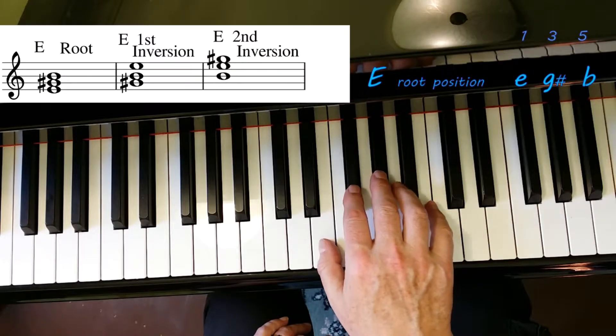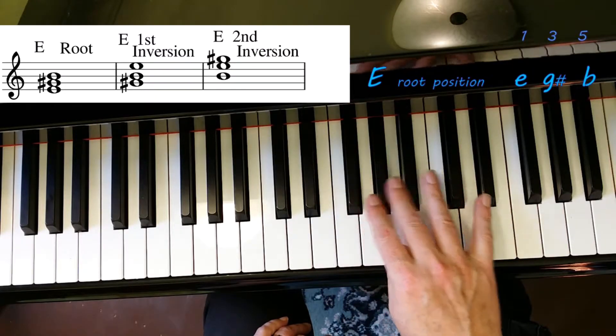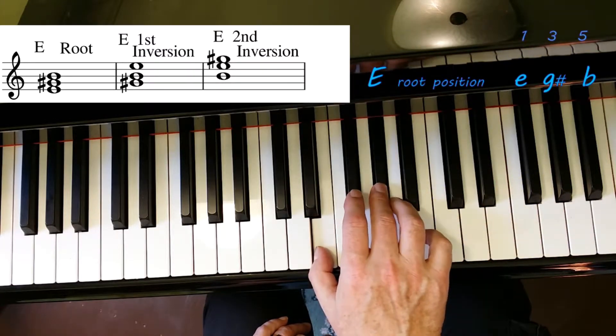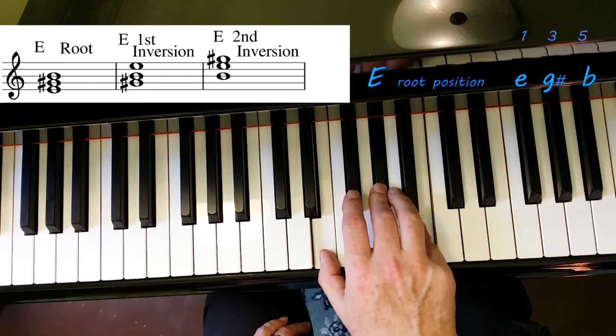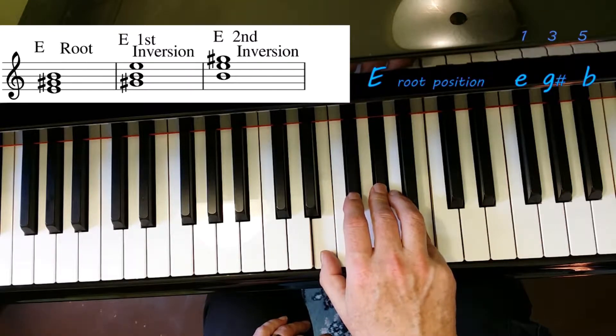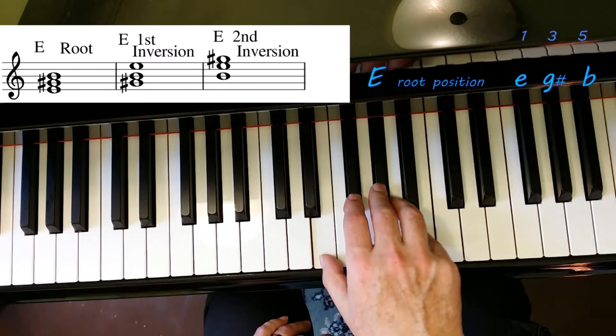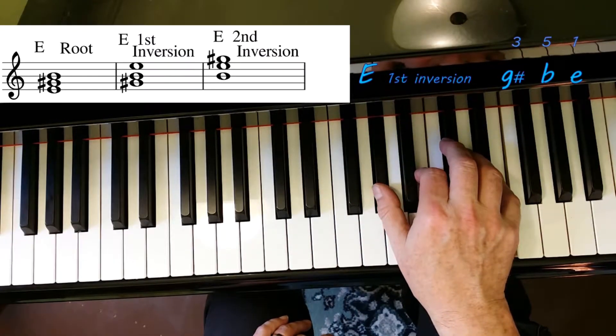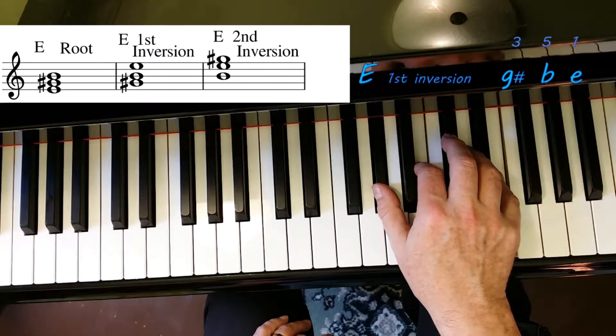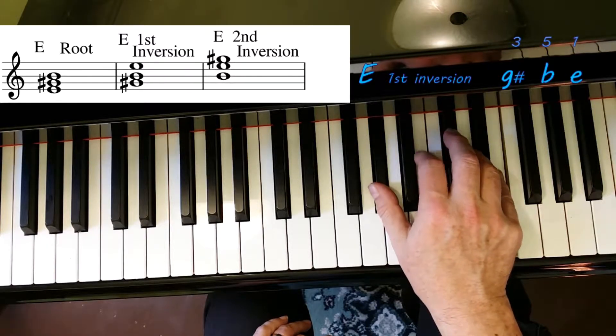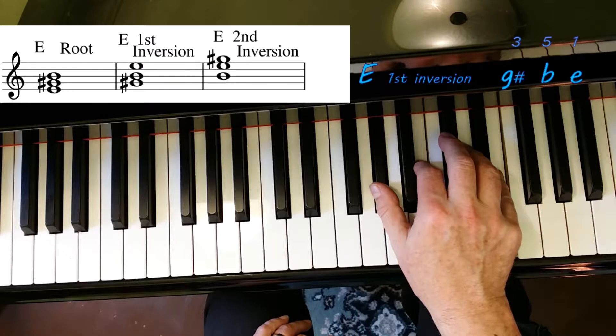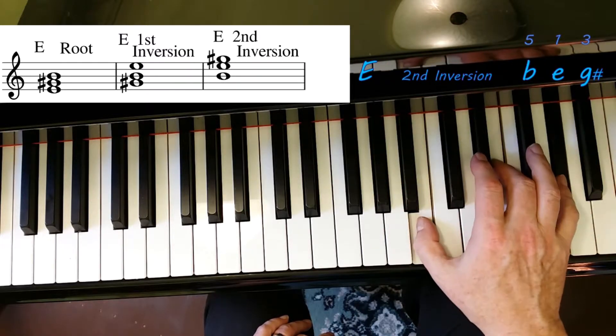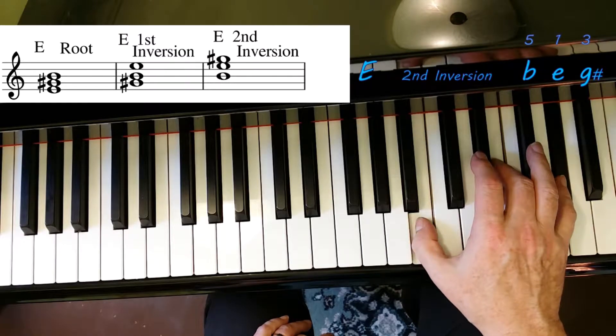Next scale: E, four sharps. Two, three, four, five, six, seven, eight. One, three, five. Notice how much D, A, and E look alike with the sharp on the middle. First inversion: one, three, five, or E, G sharp, B. And second inversion with the E in the middle: one, three, five.